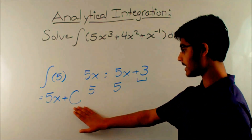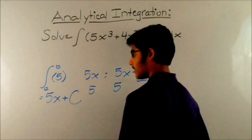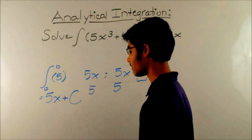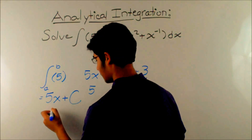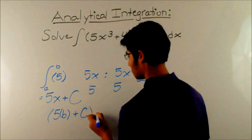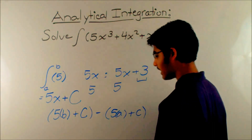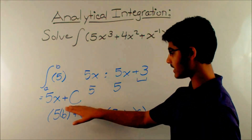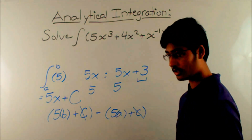Now, if you had a definite integral, you could just leave that C out. Let's say this was from point A to point B — you would have this integral, or this answer, which would be the anti-derivative. You would plug in the value of B, so you'd have 5B plus C minus 5A plus C. Then these two C's would cancel out, and you'd have 5B minus 5A. So we need to add plus C at the end of an indefinite integral, but if you have a definite integral solving for the area under the curve, the C will get cancelled out.